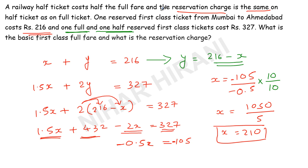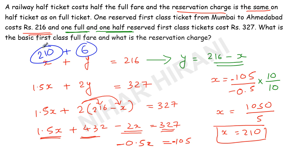Substituting x equals 210 back into the first equation gives y equals 6. So the reservation charge is rupees 6 and the basic first class full fare is rupees 210. That's it — this question is solved. I hope you find it useful.